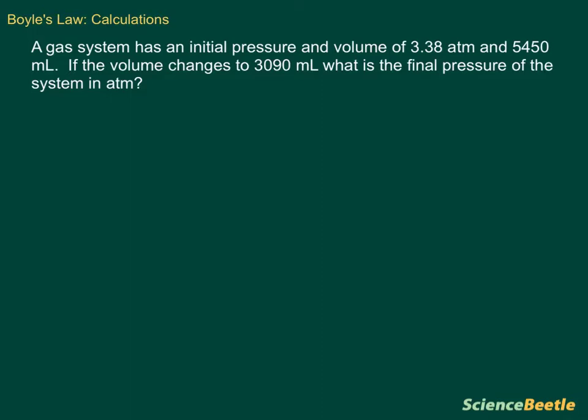So the very first thing we need to do is underline the information they give us. What is given? We know that we've got an initial pressure, and that pressure is going to be 3.38 atmospheres, so this is your P1. And we also have an initial volume, and that volume is 5450 milliliters. So this is your volume 1.